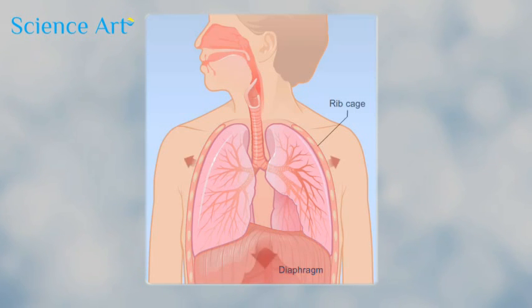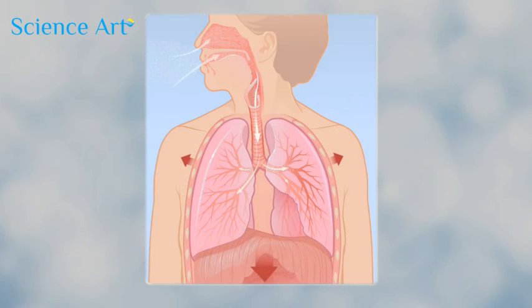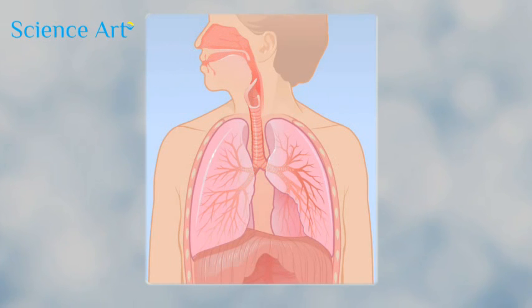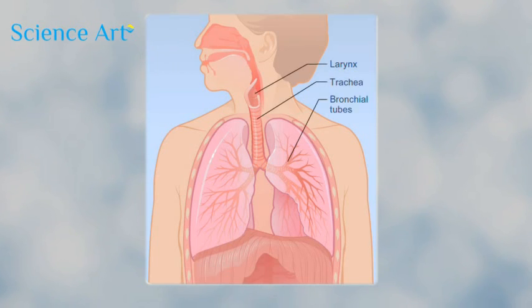As the muscles contract and the lungs expand, air is sucked through the nose and mouth. This is known as inhalation. Your nose filters, wets, and warms the air before it passes through the larynx, trachea, and the bronchial tubes within the lungs.